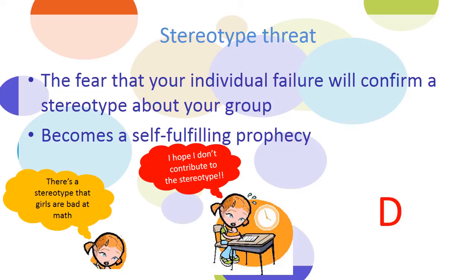When you are doing things like taking the SAT or the GRE, consider not completing the information about your ethnicity or gender. That way you might not feel concerned about confirming stereotypes about your group, because you'll know that nobody could be categorizing your performance.